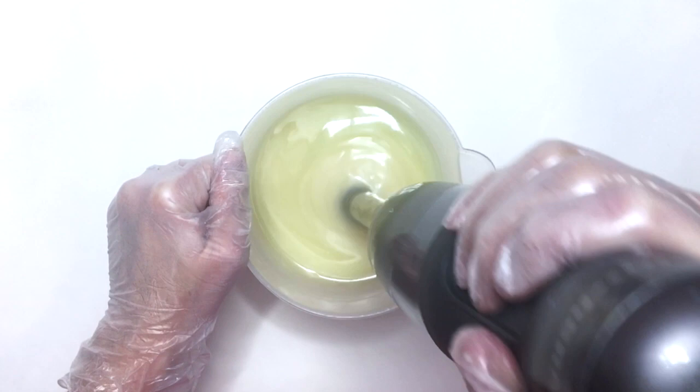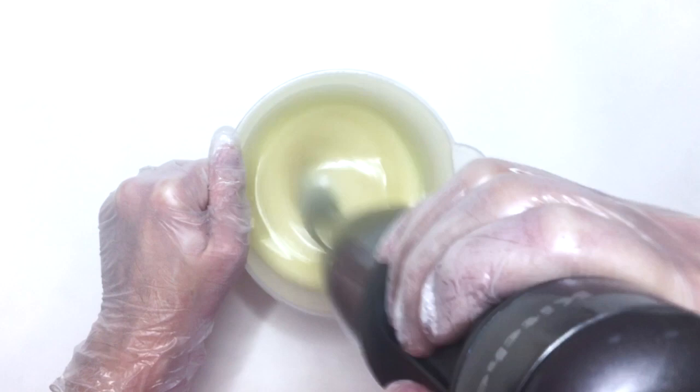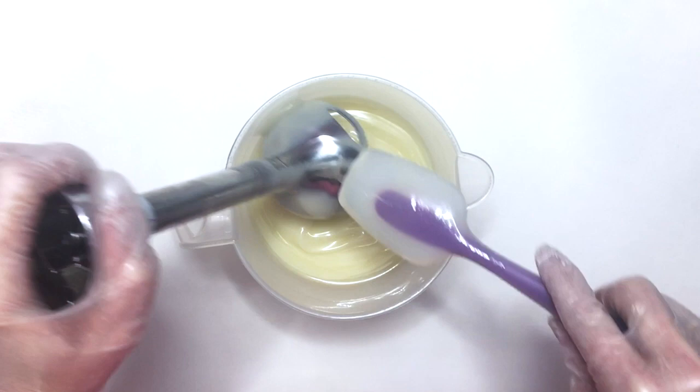As I use the stick blender, I notice that it gets very thick. This is because of the temperature that I started with. But I had to make sure it was all mixed in, so I just stick blended as little as possible.